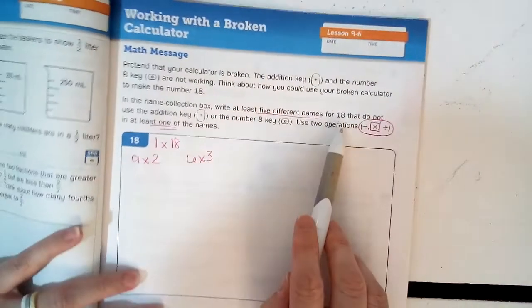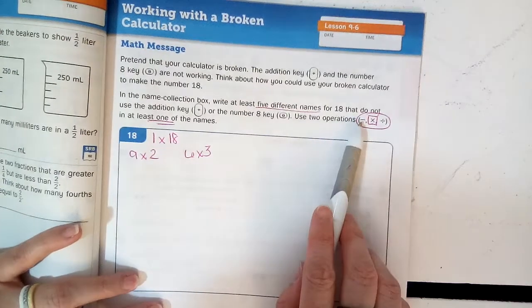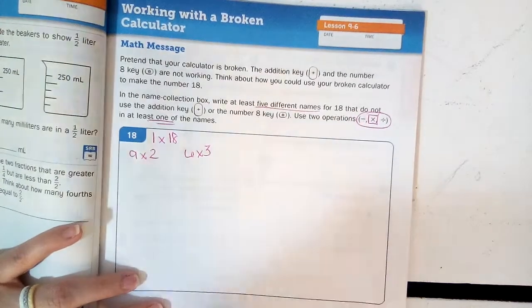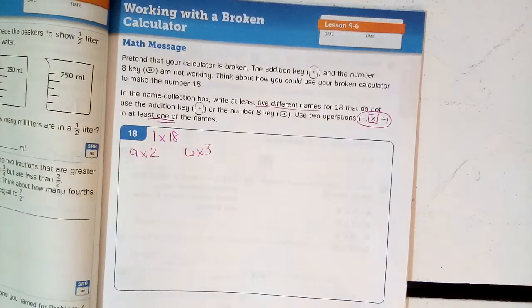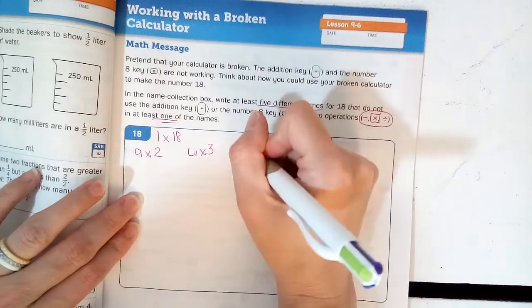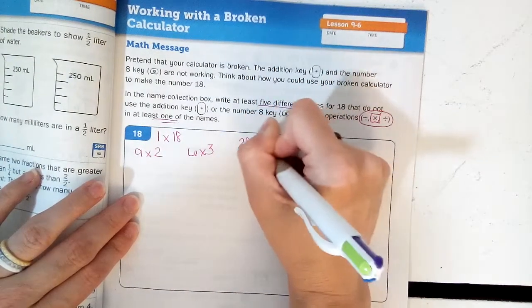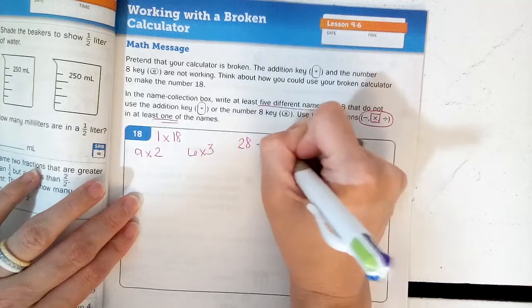What are some other creative ways that you can do to make 18? Try a big number. Take away something equals 18. Oh, I know. 28 take away 10 equals 18.